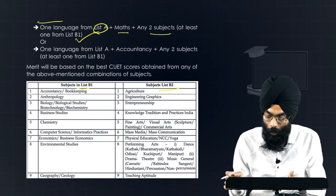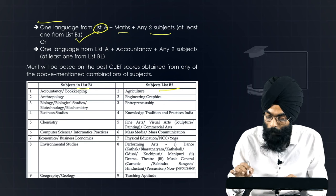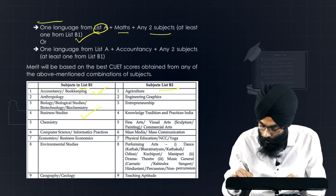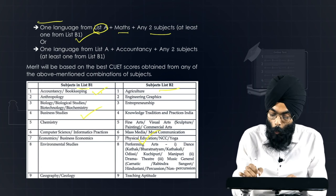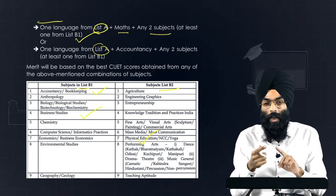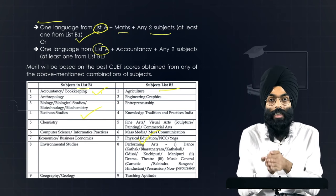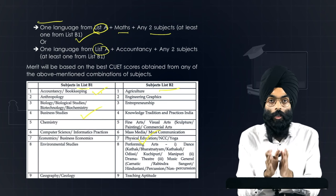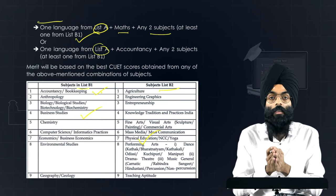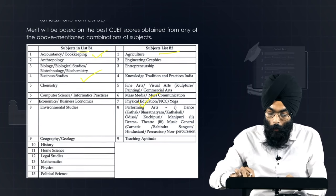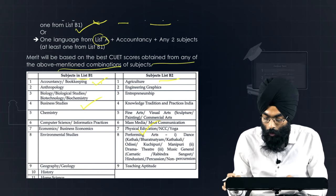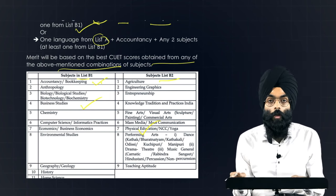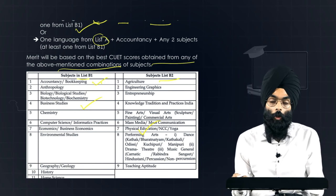So the criteria says you should take one language from List A plus maths or any two subjects — at least one from List B1. For example, you could take accountancy and business studies, or accountancy and physical education. The second option includes one language plus accountancy and any two subjects, at least one from B1. Merit will be based on the best CUET scores obtained from any of the above mentioned combinations.